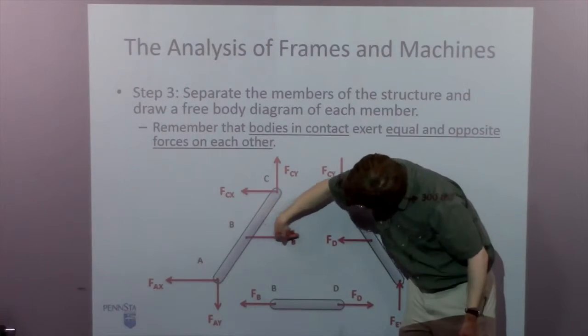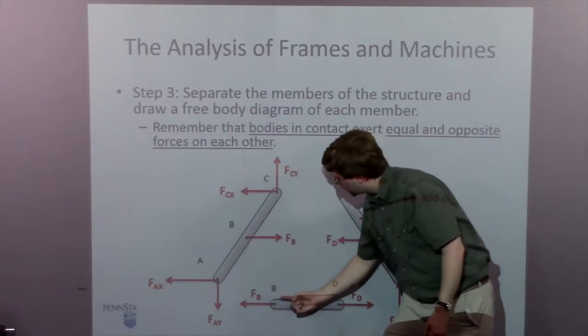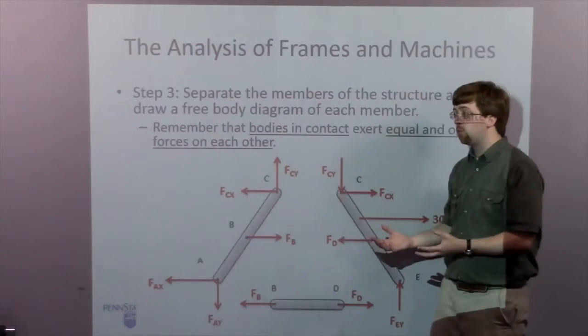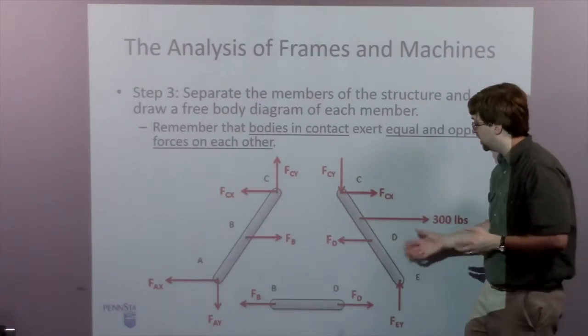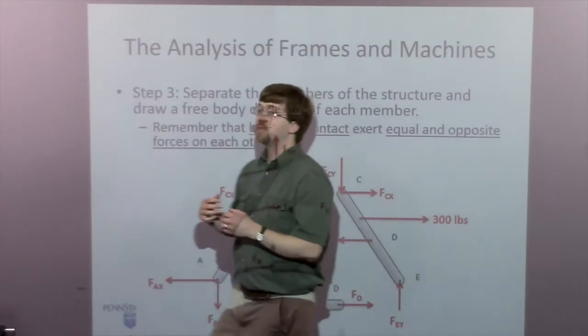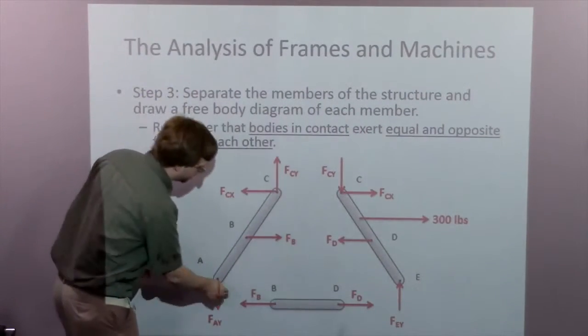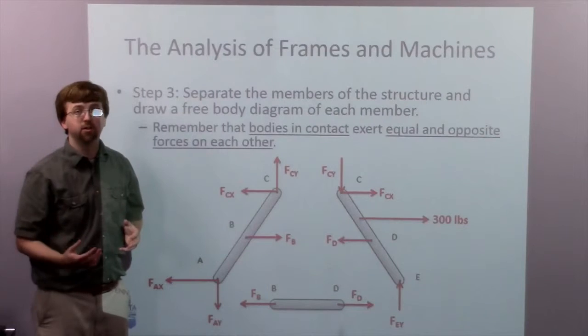Down here at FB, if it's pulling this way, it's going to be pulling that way. So I've got equal magnitude, but opposite direction for each of those forces. And whenever I've got the same force showing up in two places, FB and FB, that needs to be true.